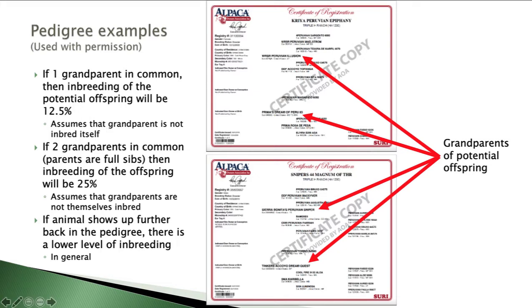If you find that two grandparents are in common — essentially meaning the parents are full siblings — then the inbreeding of the offspring will be 25%. Again, this assumes those grandparents are not themselves inbred, because that would increase the level of inbreeding.